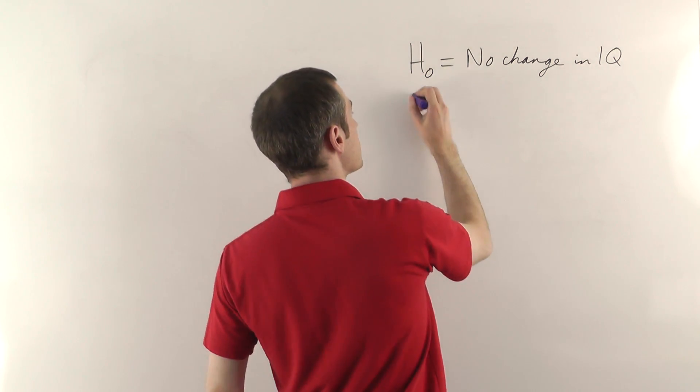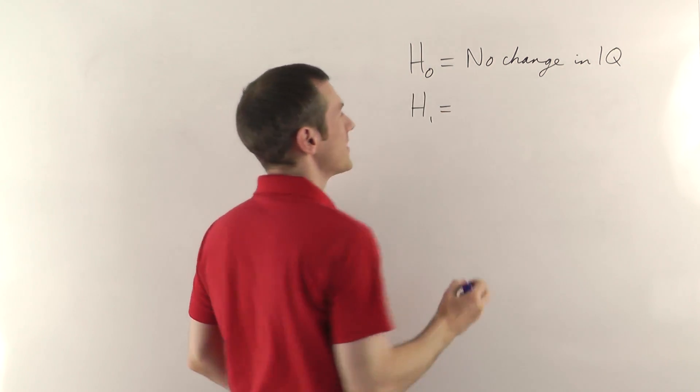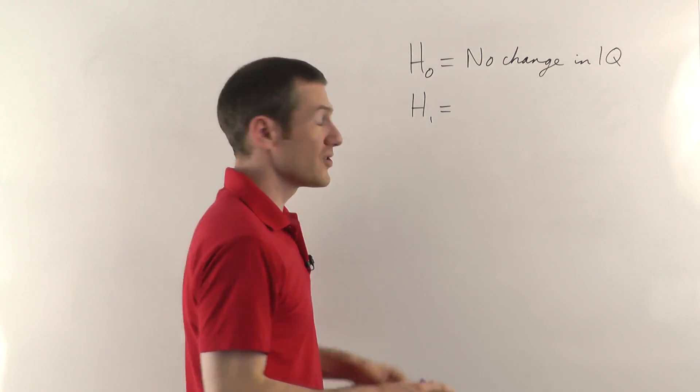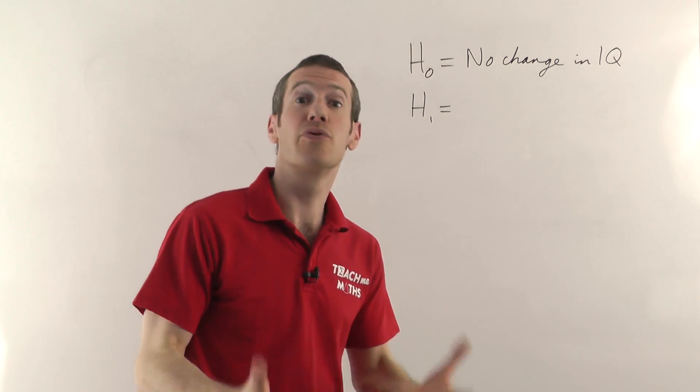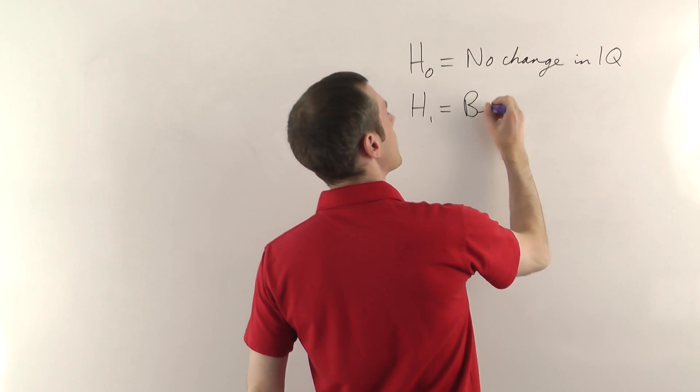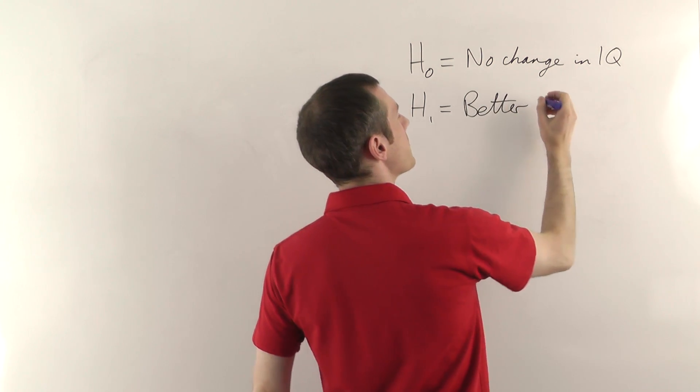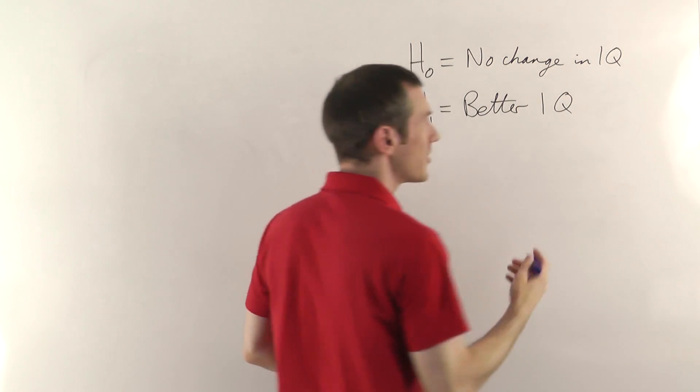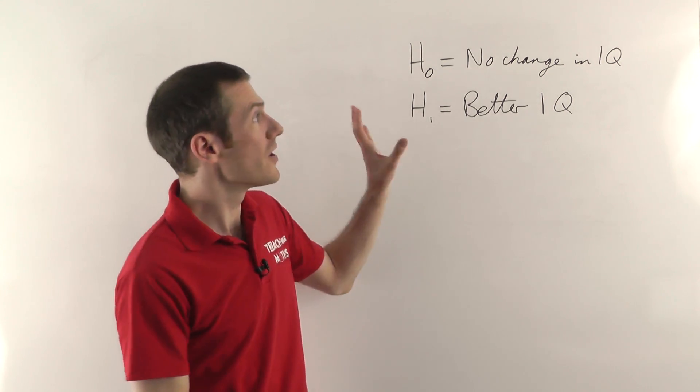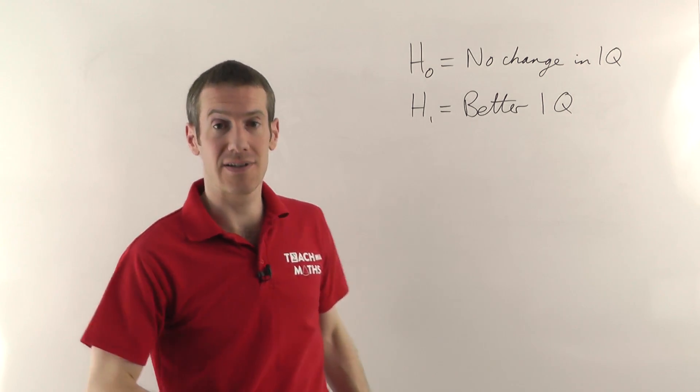So H1, the alternative hypothesis - this is what we're hoping to prove - is that there is a change and not just a change but we're hoping that there's going to be an improvement in their IQ. So H1 is that they have a better IQ after they've taken our wonder drug. Just bear those in mind, we'll refer back to those later.